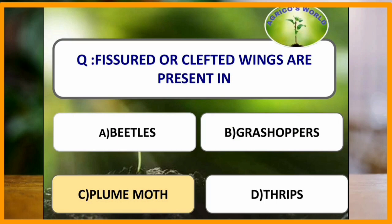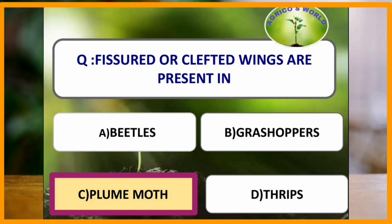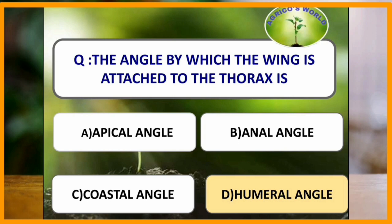Fissured or clefted wings are present in which of the following? Fissured or clefted wings are present in plume moth. In plume moth, the forewings are longitudinally divided twice, forming a fork-like structure, whereas hind wings are divided twice into three arms. All the forks possess small marginal hairs which are used for the flight of plume moth. The angle by which the wing is attached to the thorax is the humeral angle.